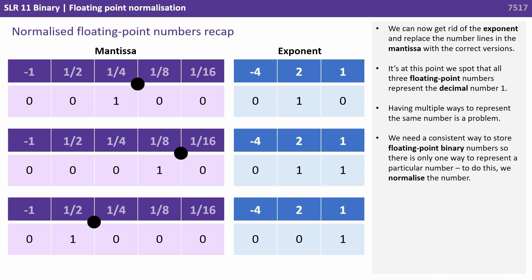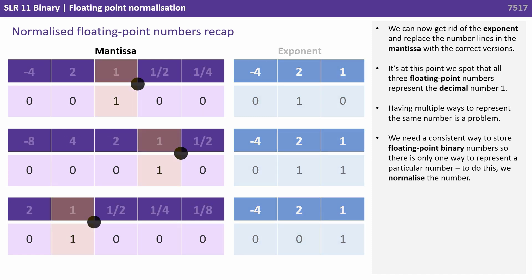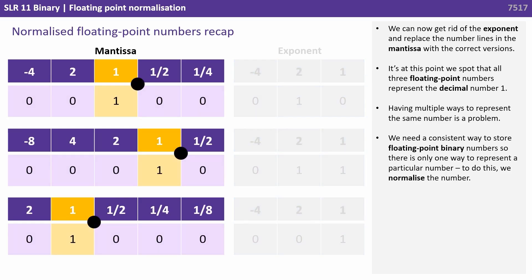We can now get rid of the exponents and replace the number lines in the mantissa with the correct versions. At this point we spot that all three floating point numbers represent the decimal number 1. Having multiple ways to represent the same number is a problem. We need a consistent way to store floating point binary numbers, where there's only one way to represent any given number — and to do this we normalise the number.